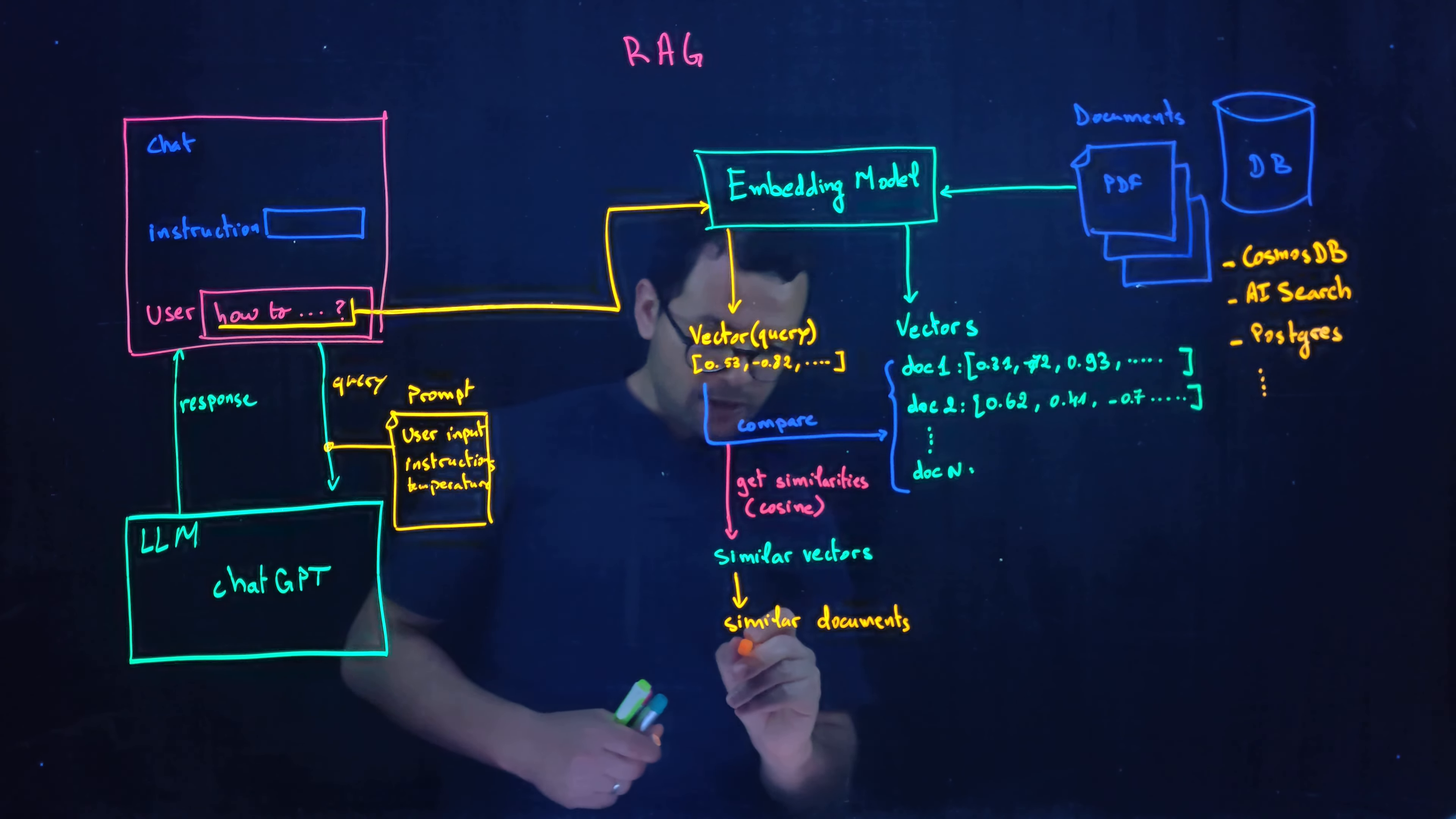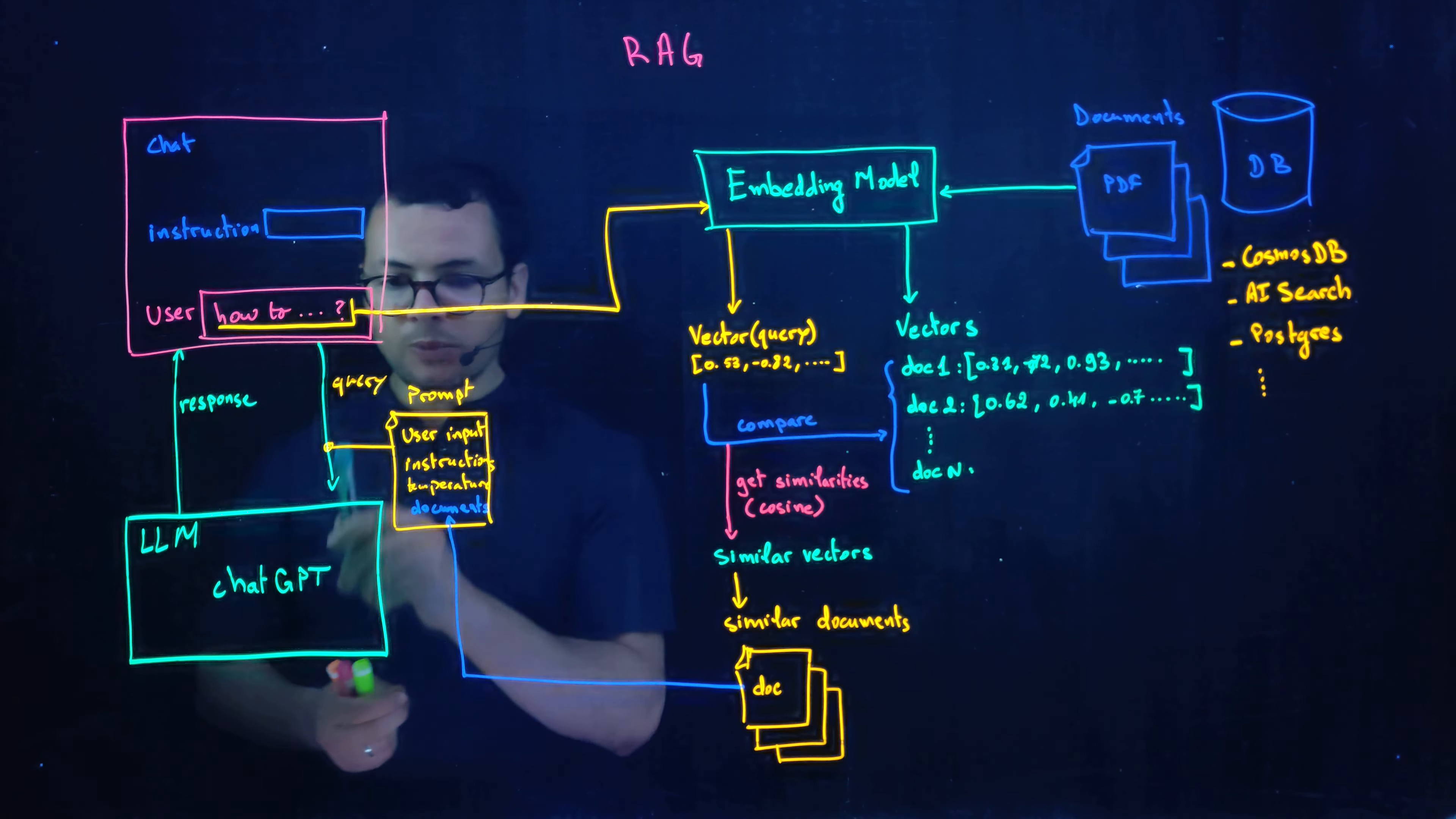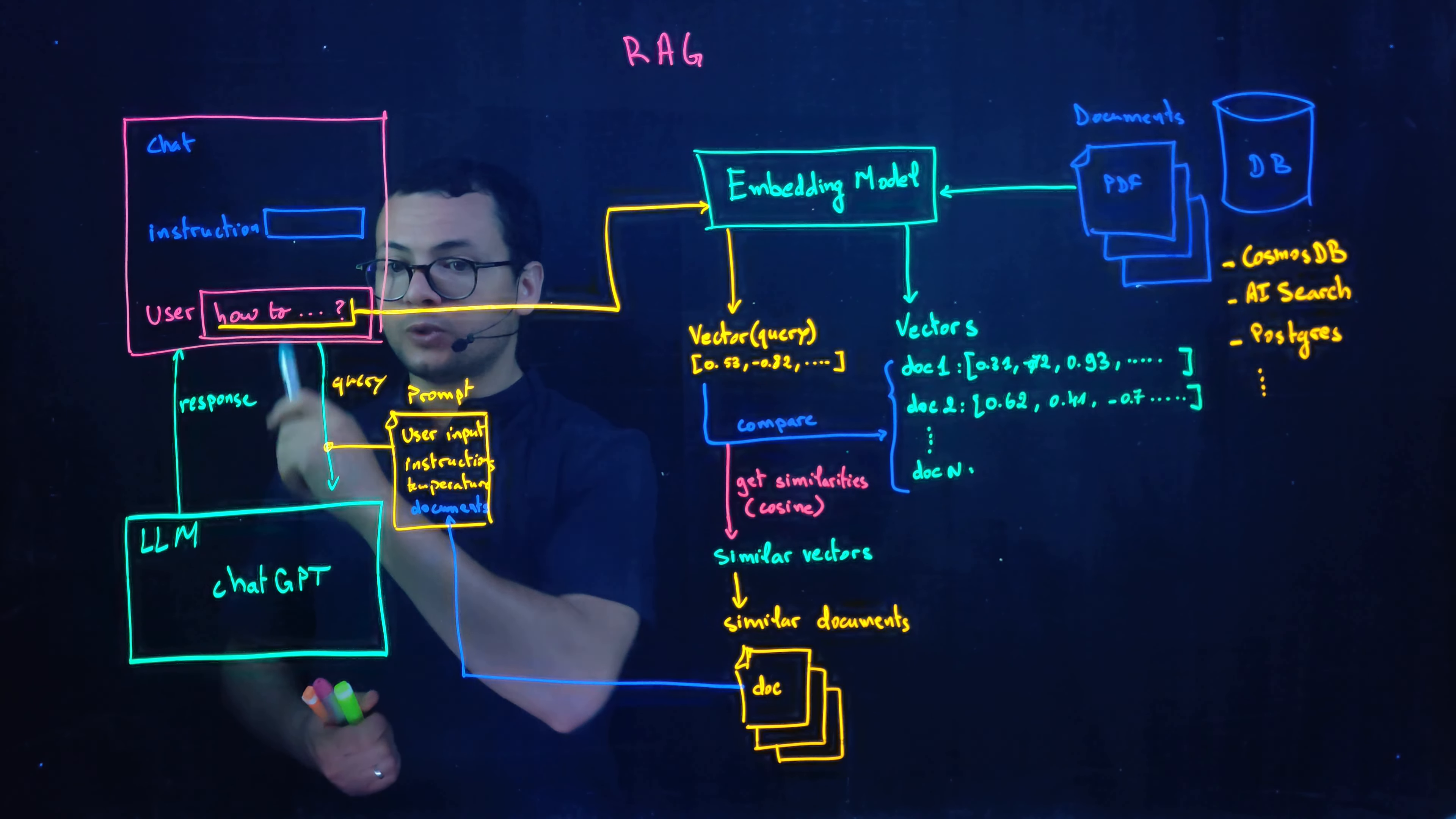So now that we have those similar documents, we'll go to simply add those documents to the prompt or to the query by the user. So this way the query will contain the user query and also the documents so that ChatGPT will get the full context and then it will give back the response to the user.